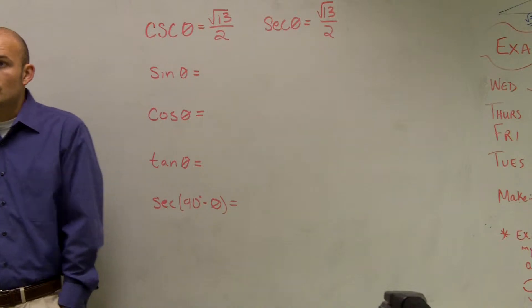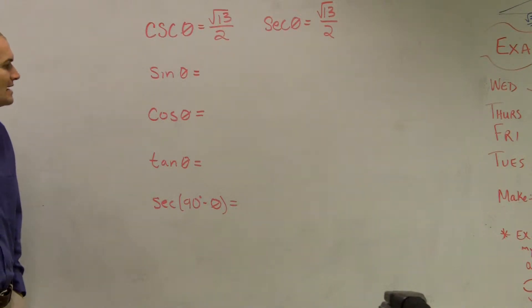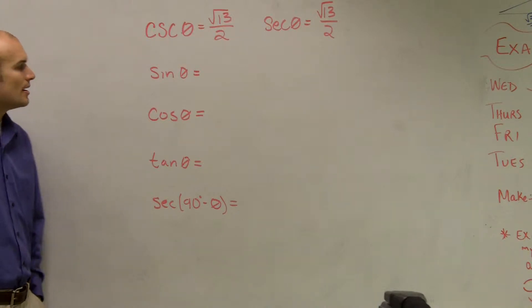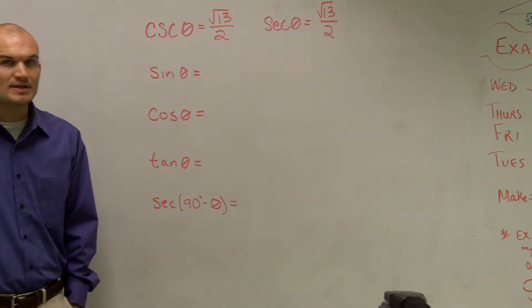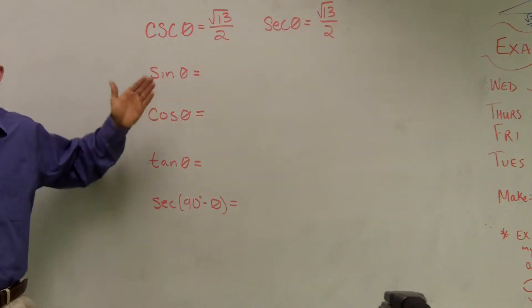Now, I could just make a triangle out of this and say, you know, just label them and find our sine, cosine, and tangent. However, there's a couple things that you guys can really notice about this that we don't even have to go through drawing a triangle.